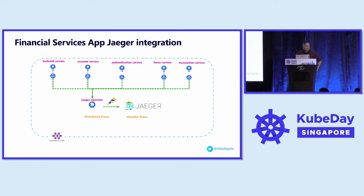In this setup, I'm using the same financial services app with Jaeger as the distributed tracing framework. There is a Micrometer component that outputs the metrics, and a Jaeger Operator deployed in the Kubernetes cluster which collects these traces. Using the OpenTelemetry Collector, it routes them to Jaeger. We visualize this using the Jaeger user interface.